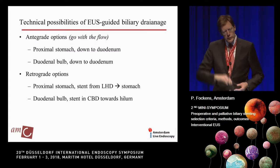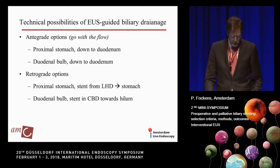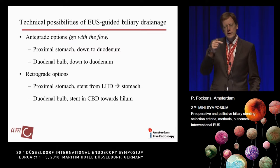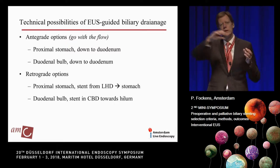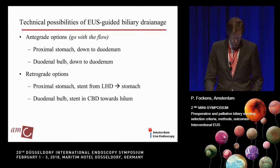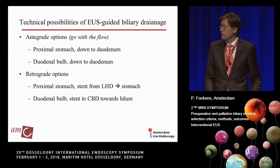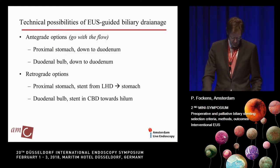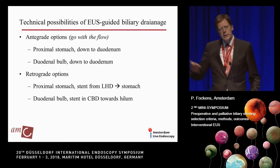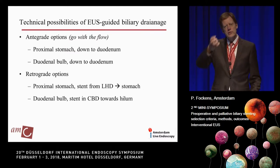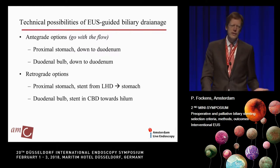Quite often, we go the other way — retrograde. From the proximal stomach, we puncture antegrade, but when we place a stent, we want retrograde flow of bile through to the stomach. In the duodenal bulb, we go retrograde into the common bile duct and place a stent to escape from the papilla and the possibility of pancreatitis. Typically, we do that for lesions distal to the duodenal bulb — mainly for pancreatic cancer, or very distal cholangiocarcinomas, which are quite rare.